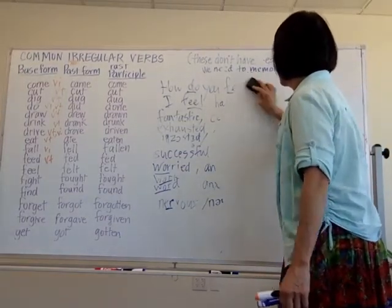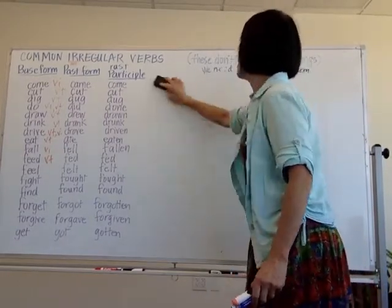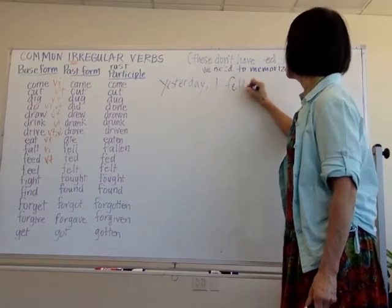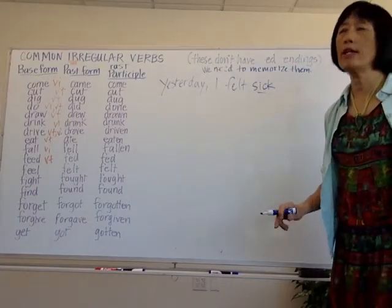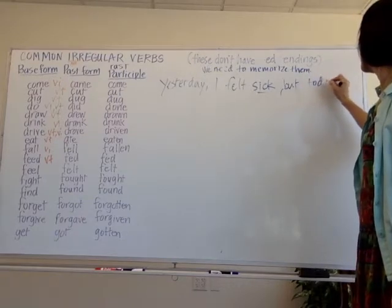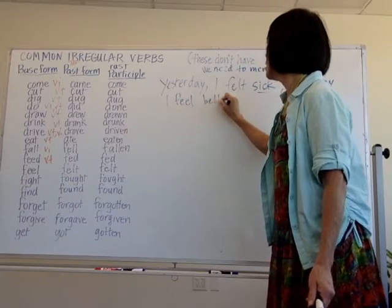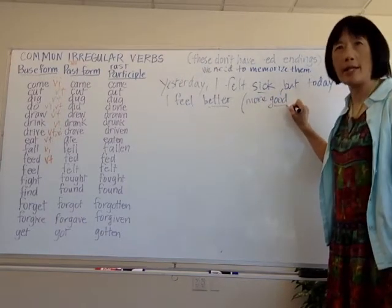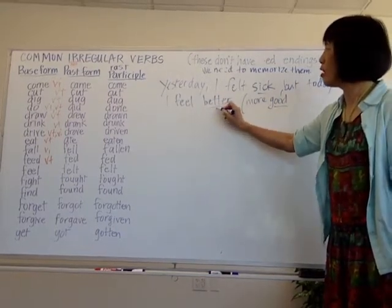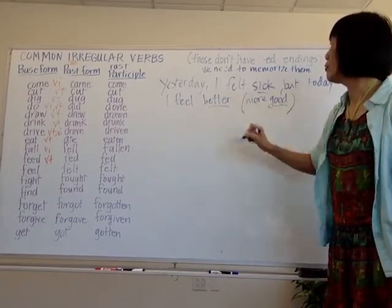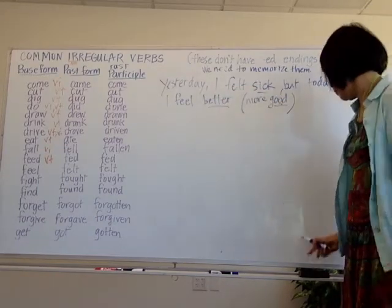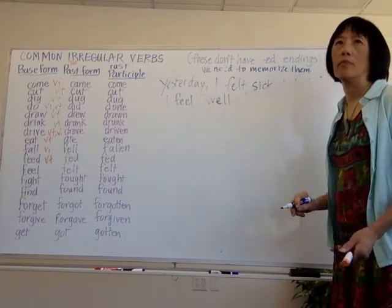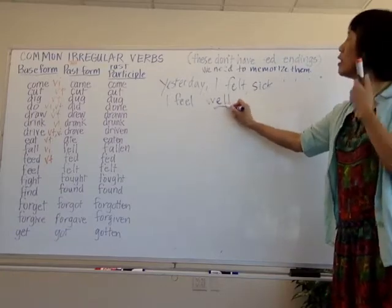The past tense of 'feel' is 'felt.' For example: yesterday I felt sick. But today I feel better. 'Better' means 'more good' — it's the irregular comparative of 'good.' So: yesterday I felt sick, today I feel better. Or you could say: today I feel the opposite of sick — I feel well. When you say 'I feel well,' you're talking about your health.